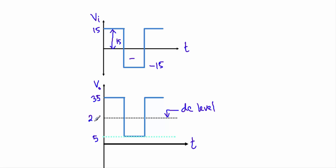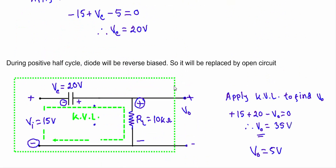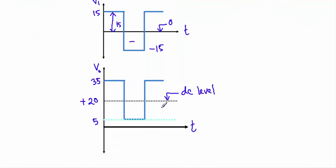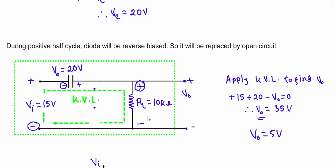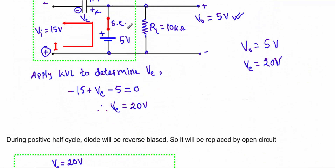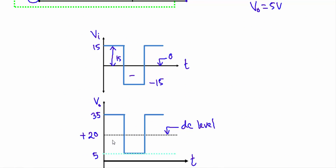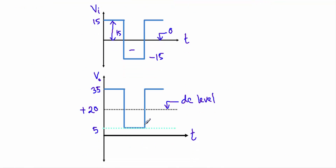The new DC level is at 20 volts. Previously, without any bias voltage, the DC level would be at 0V and the new DC level would shift to +15V. But by adding a bias voltage of 5 volts, I have further shifted the DC level by 5 volts, giving a new DC level of +20 volts. Since the input voltage is shifted in the upward direction, this confirms that this is a positive clamper circuit.